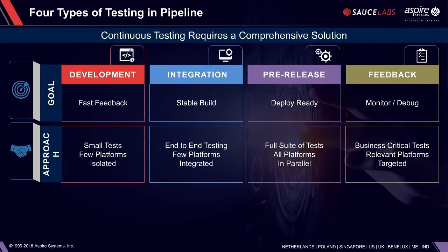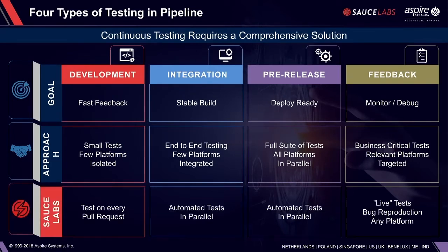The approach for feedback is monitoring those business-critical tests on the relevant targeted platforms. Based on the demographics or regions of your users, you identify which areas to test, what's critical, and what could potentially destroy revenue for your company — and ensure you're testing those critical areas regardless.